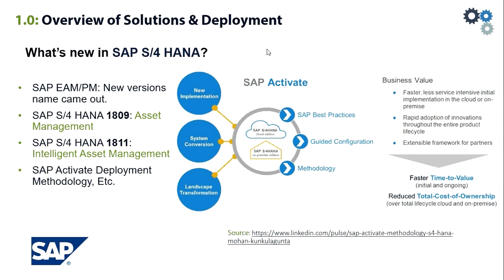What's new in SAP S4 HANA for plant maintenance? A new version came out: first we have S4 HANA 1809, or asset management, and S4 HANA 1811, or what we call intelligent asset management. Aside from new versionings, there are new methodologies and approaches to accelerate software development projects. The most recent innovation is the SAP Activate methodology, which builds on proven approaches and principles outlined on the screen.